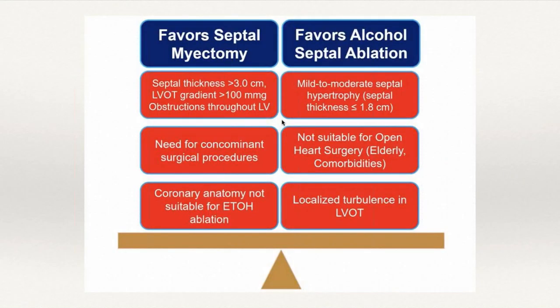Factors favoring septal myectomy: septal thickness greater than 30 mm, LVOT gradients higher than 100 mmHg, need for concomitant surgical procedures (e.g., mitral valve repair or bypass grafting), or coronary anatomy not suitable for alcohol ablation. Factors favoring alcohol septal ablation: only mild to moderate septal hypertrophy less than 1.8 cm, patient not suitable for open heart surgery given comorbidities or advanced age, or if there is only localized turbulence in the LVOT rather than obstruction.